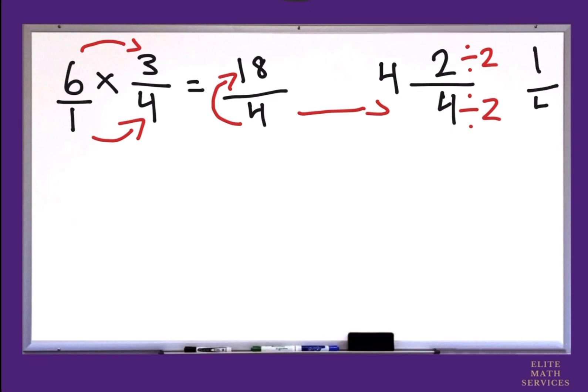So now we're left with 1 over 2 and when we add our whole number, we have a final answer of 4 and 1 half.